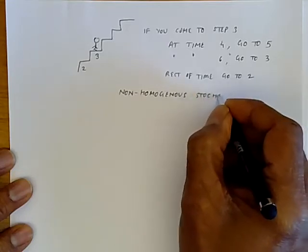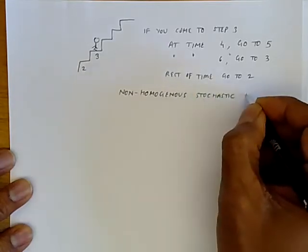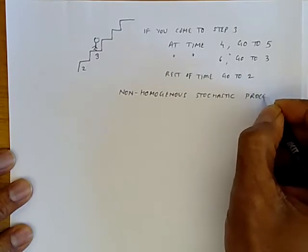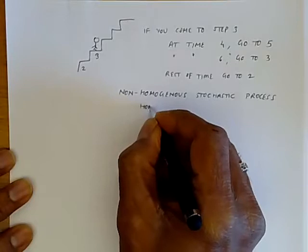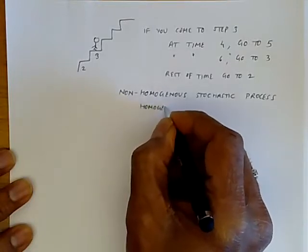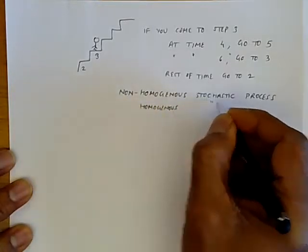And if, on the other hand, what you do is independent of time, then we call it a homogeneous stochastic process.